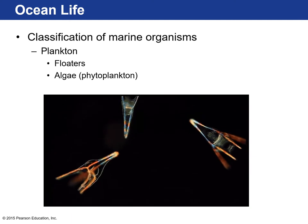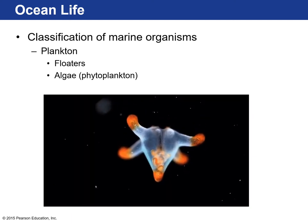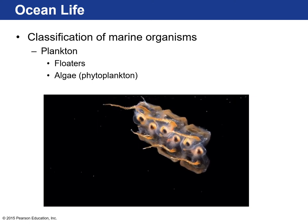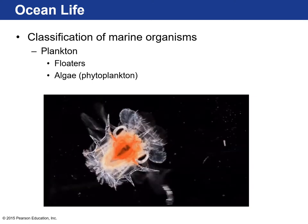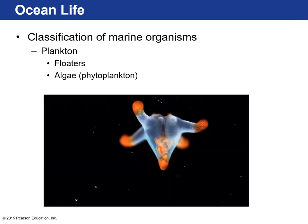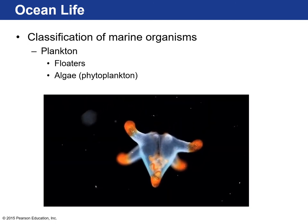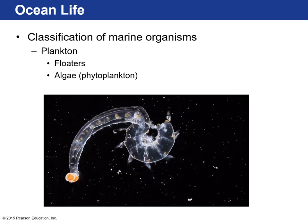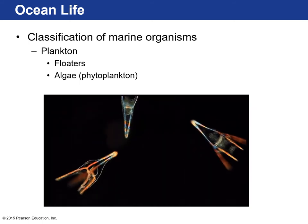There are different ways of classifying marine organisms. One way is to describe whether or not they swim actively or just float. Plankton refers to marine organisms that can't actively swim — they float in the ocean currents and try to stay in the sunlit layers of the ocean.